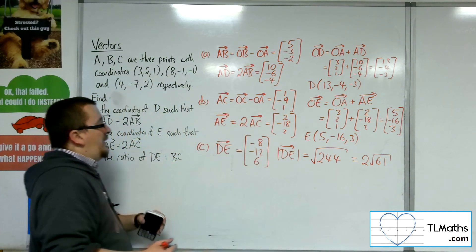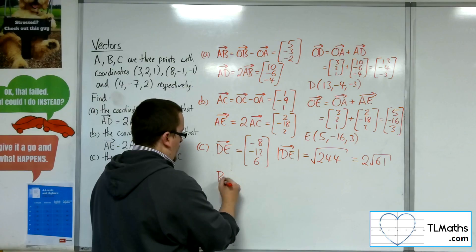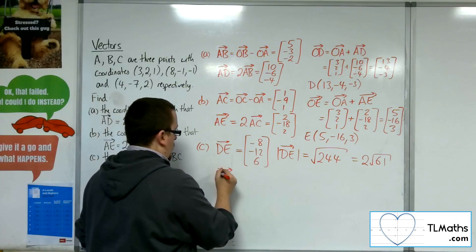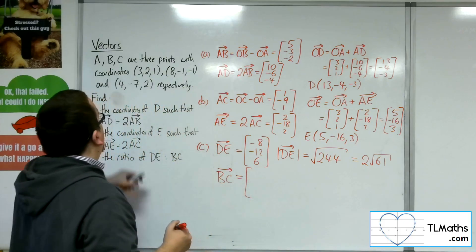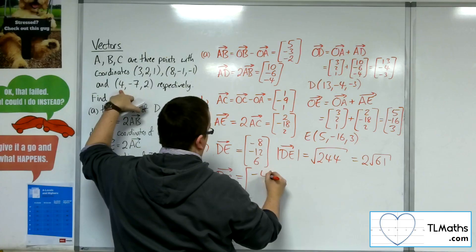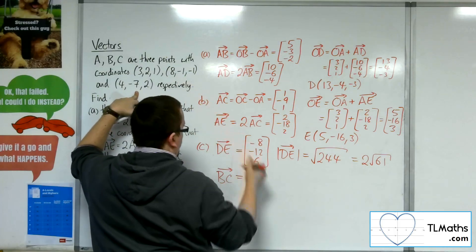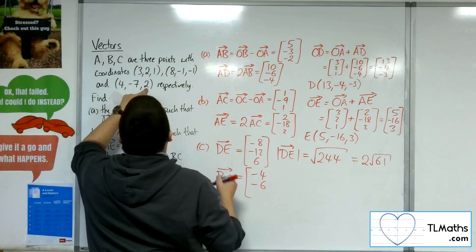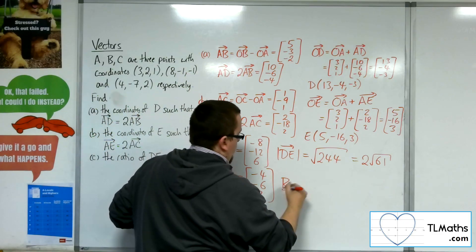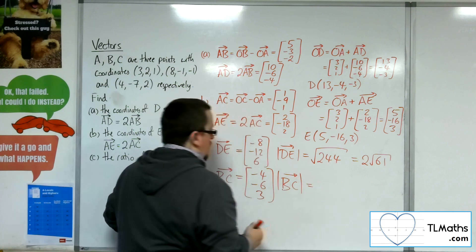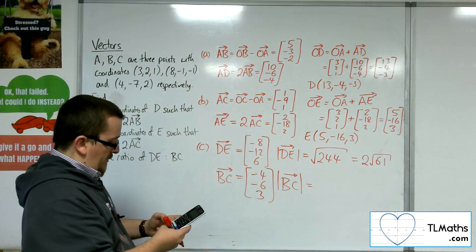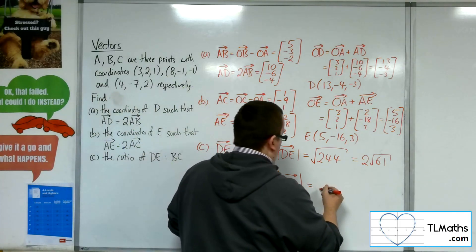And then I also need BC. So BC as a vector is C minus B. So 4 take away 8, minus 7 take away minus 1, and 2 take away minus 1. Now, the length of BC is equal to 4 squared plus 6 squared plus 3 squared square rooted. So the square root is 61.